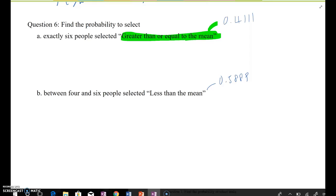Same thing, same situation. We are selecting randomly 10 people. So this case, 10 C6 and then 0.4111 to the sixth power and 0.5889 to the fourth power. If you calculate that, you will get 0.1219.